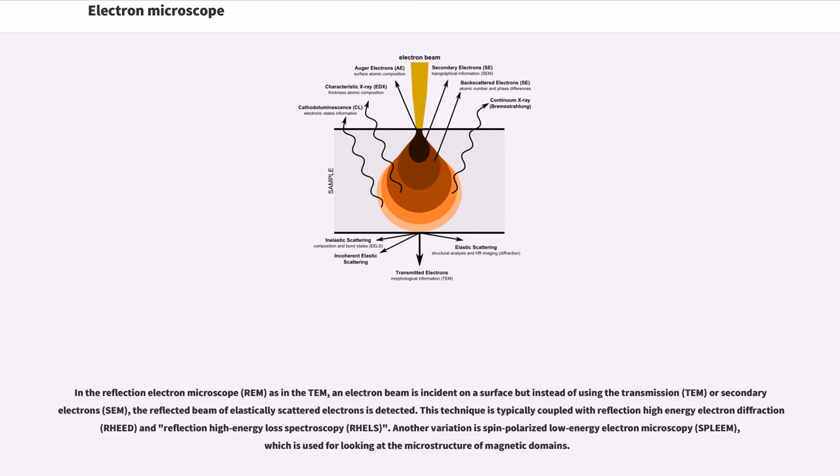In the reflection electron microscope REM, as in the TEM, an electron beam is incident on a surface but instead of using the transmission TEM or secondary electrons SEM, the reflected beam of elastically scattered electrons is detected.